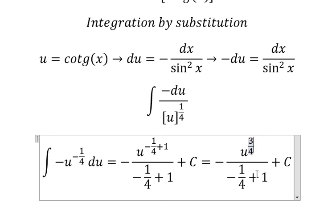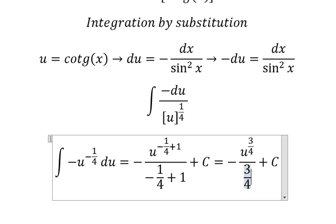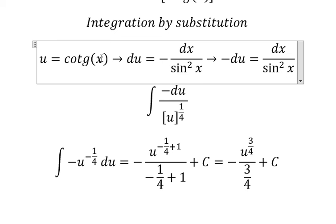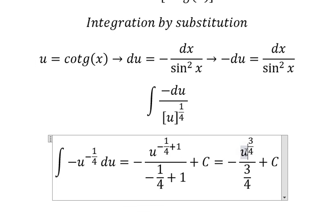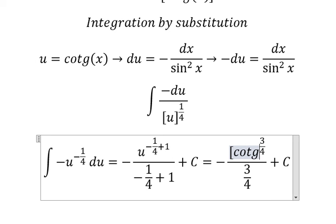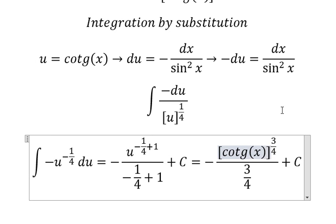Substituting back, u equals cotangent x, and this gives us the final answer. That is the end. Thank you for watching.